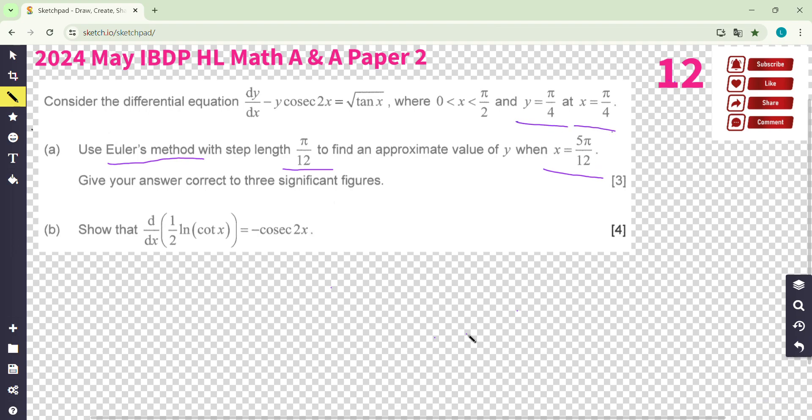This one power 4. First you need to move this to the right hand side and then find out dy/dx equals square root of tangent x plus y times cosecant 2x. Get ready for your calculator, we draw the table.